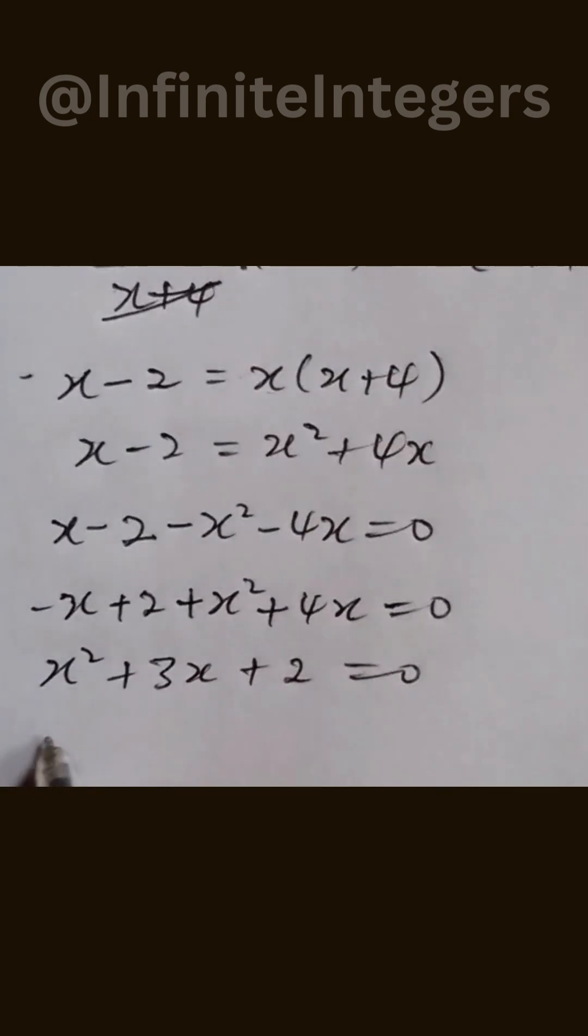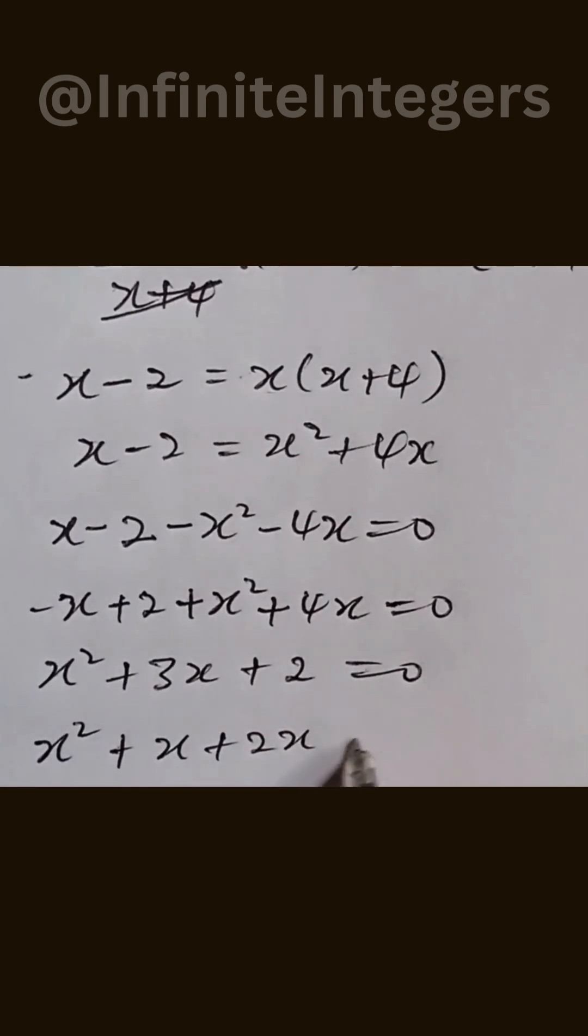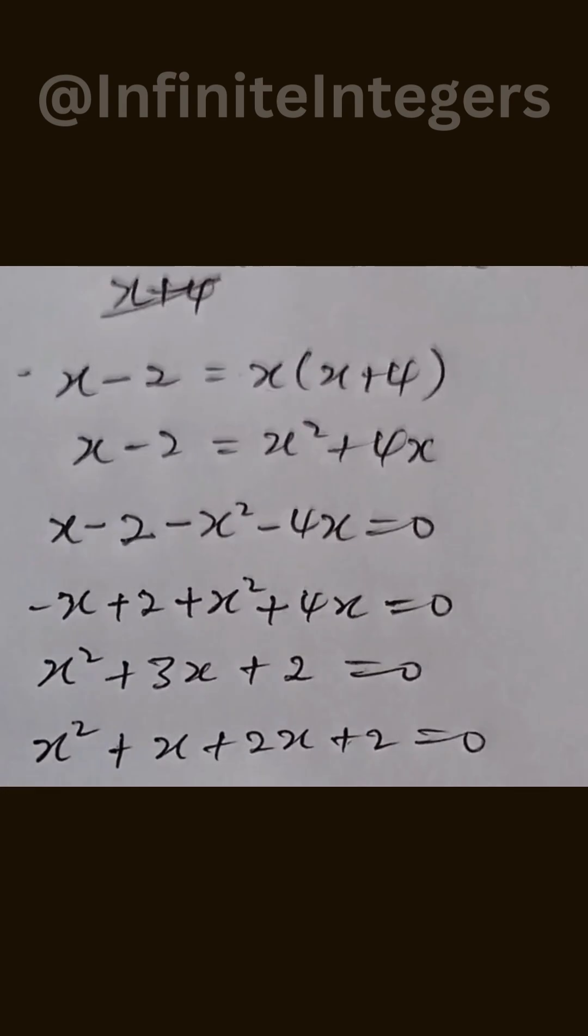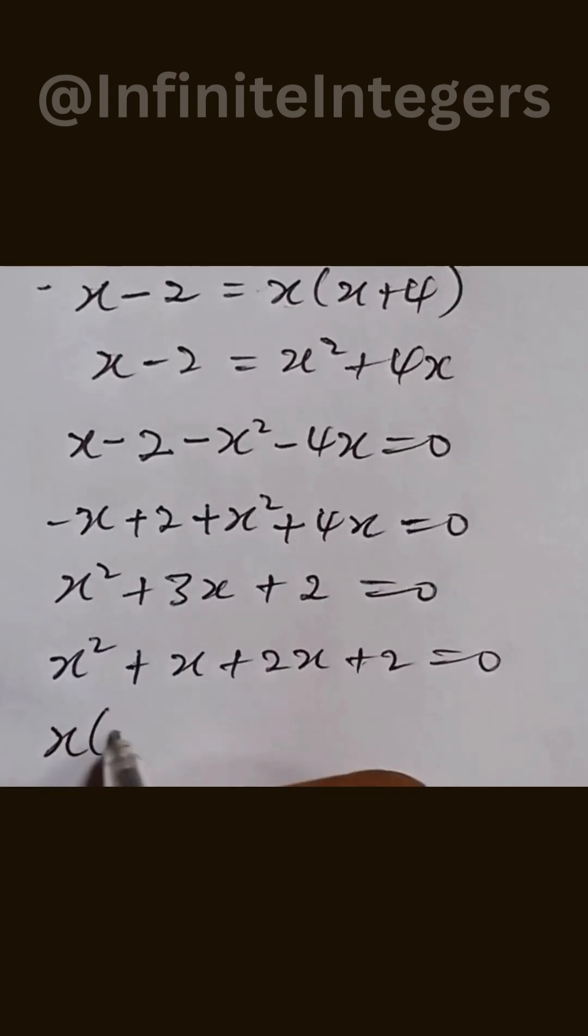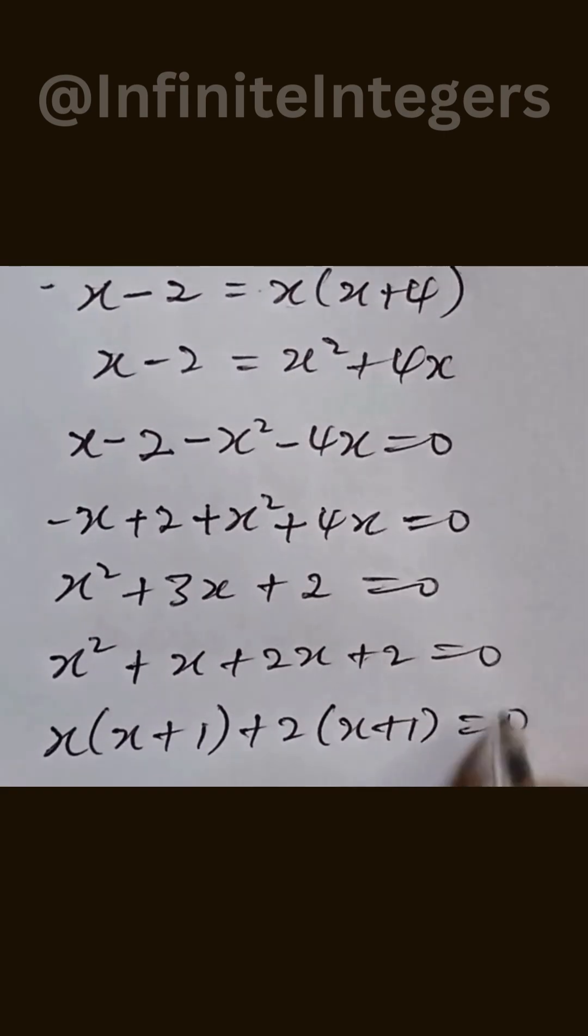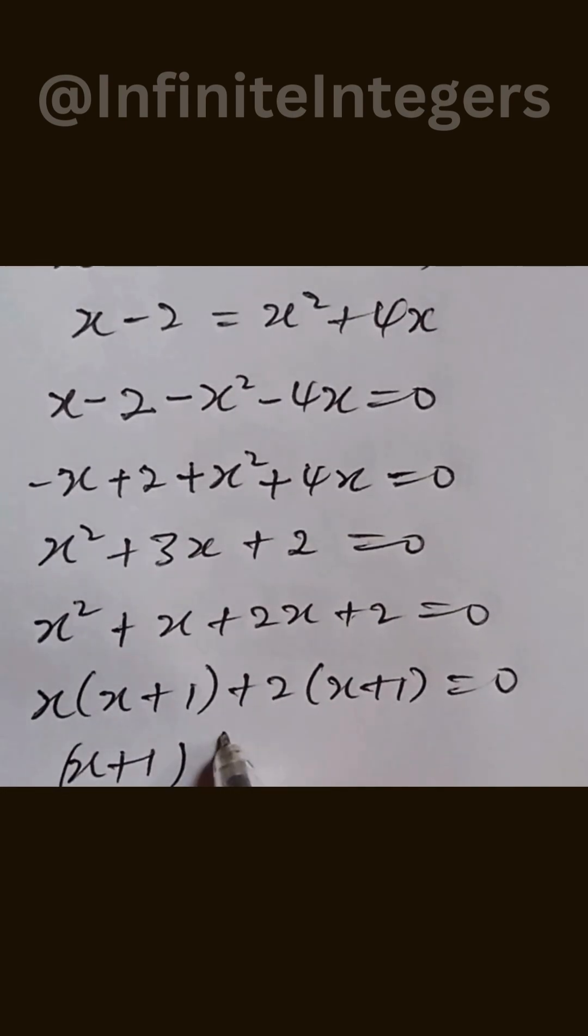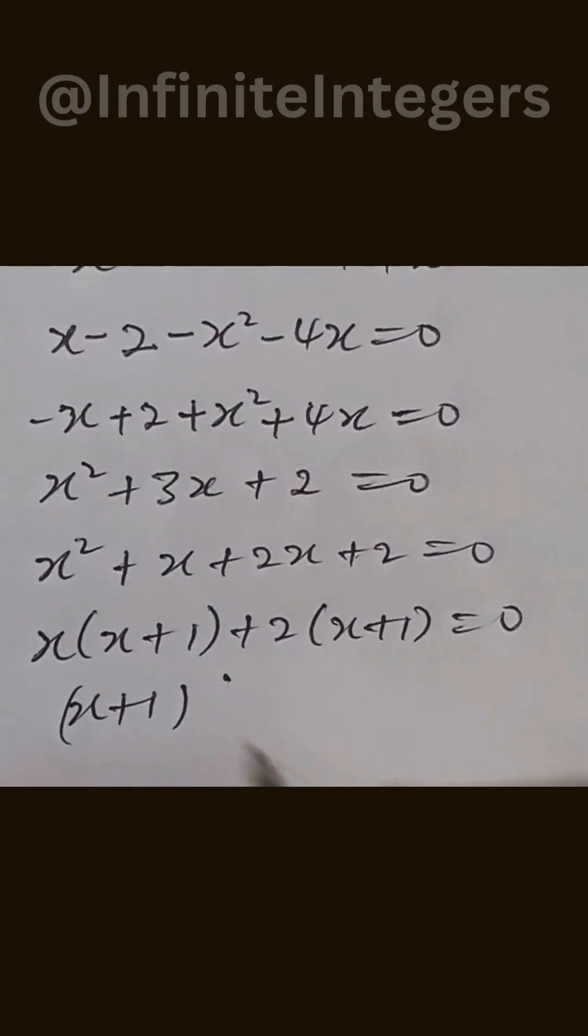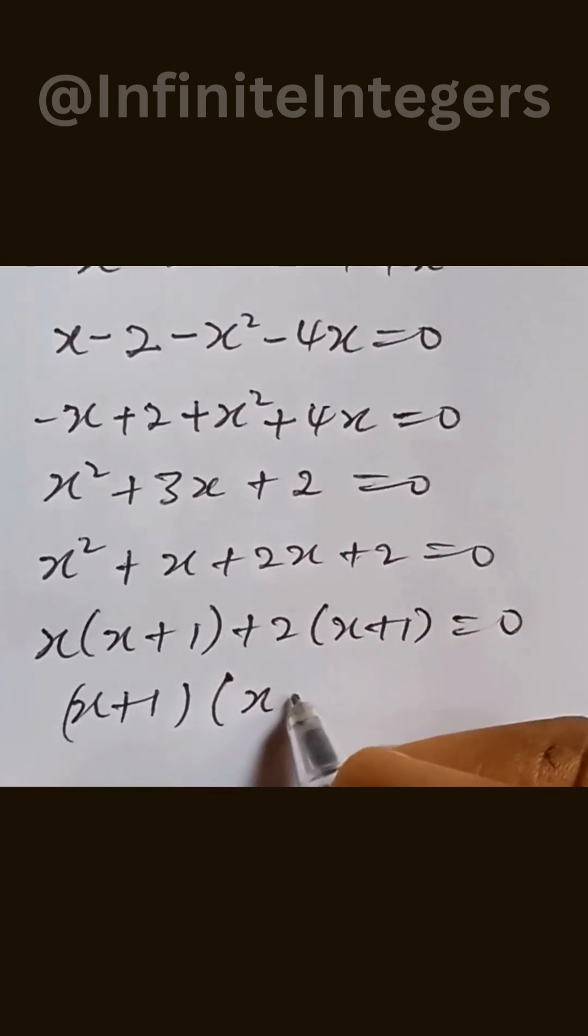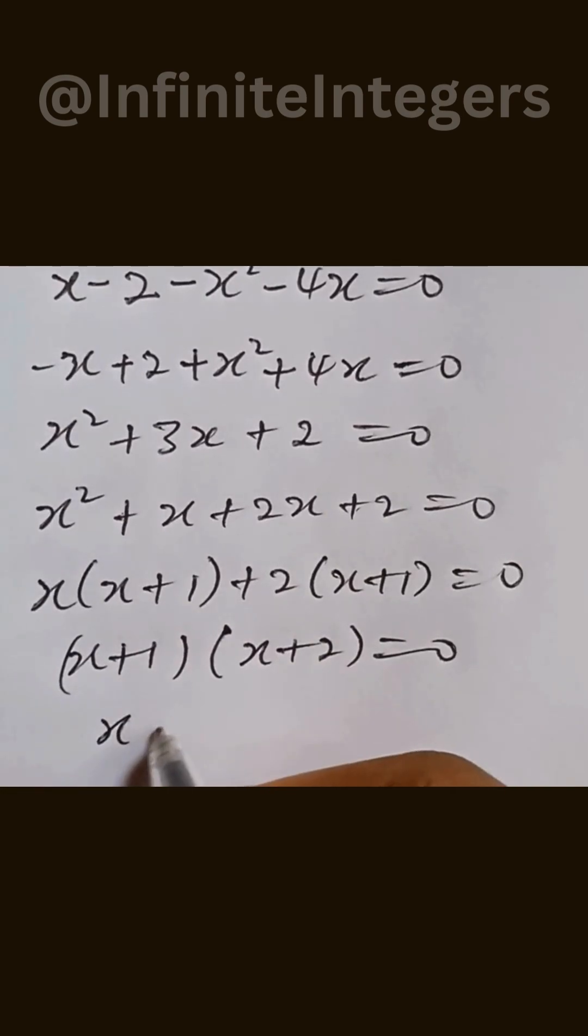We can factorize this as x squared plus x plus 2x plus 2 equal to 0. Then we have x into bracket x plus 1 plus 2 into bracket x plus 1 equal to 0. This gives us x plus 2 into bracket x plus 1 equal to 0.